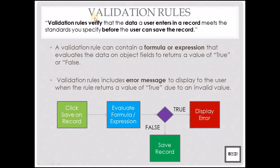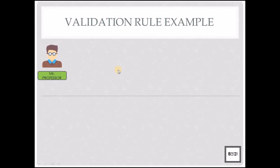Now let's get on to the next part: validation rules. A validation rule verifies the data that a user has entered before the user can save the record — it basically ensures that the user does not input wrong data. A validation rule has two parts: first, a formula or expression, and second, an error message. When a user enters data and clicks save, it evaluates the formula. If the output is true, it displays an error message; if false, it saves the record.